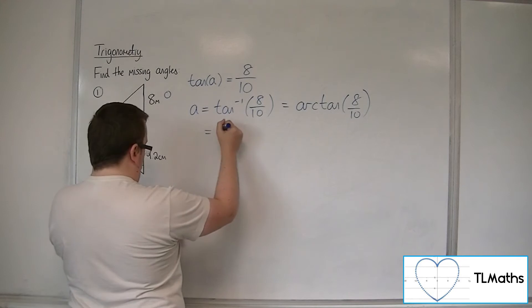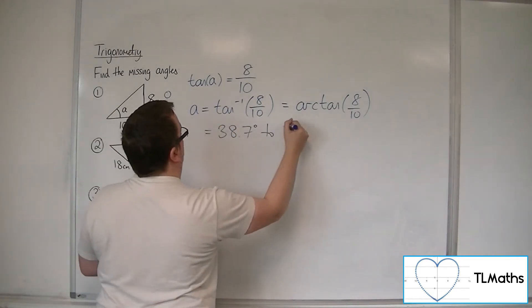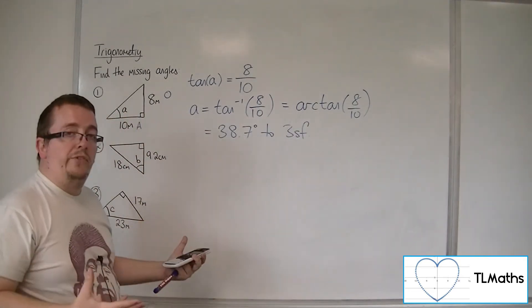So if we go for three significant figures, then we've got 38.7 degrees to 3 sig fig. And that is my missing angle.